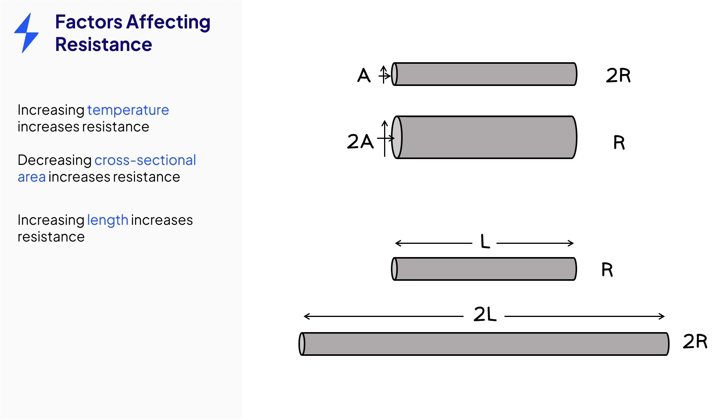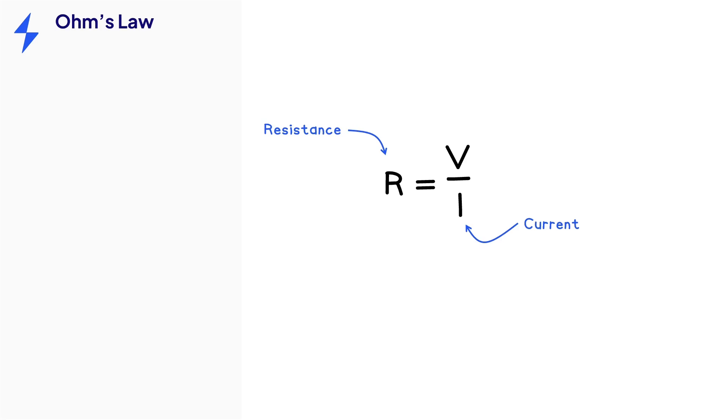So we have three factors affecting resistance: temperature, cross-sectional area, and length. Resistance, current, and potential difference are all related. If you change just one of those variables in a circuit, they all change. This equation is called Ohm's law or the resistance equation.